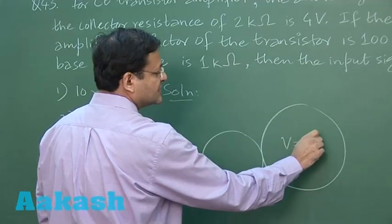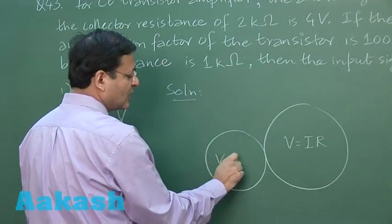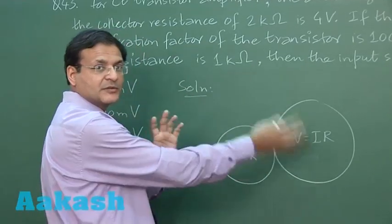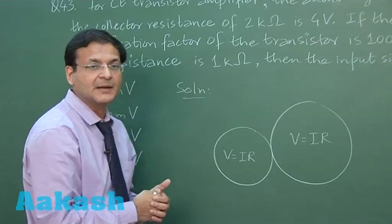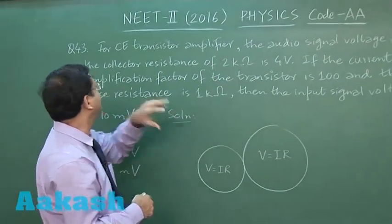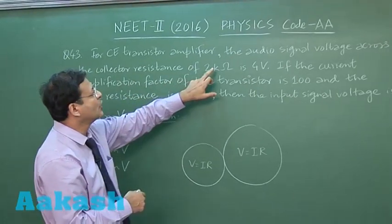You have to use V = IR. This is collector current, this is base current, and the ratio of collector current to base current is the current amplification factor. It says that in a common emitter transistor amplifier, the audio signal voltage across the collector resistance of 2 kΩ...